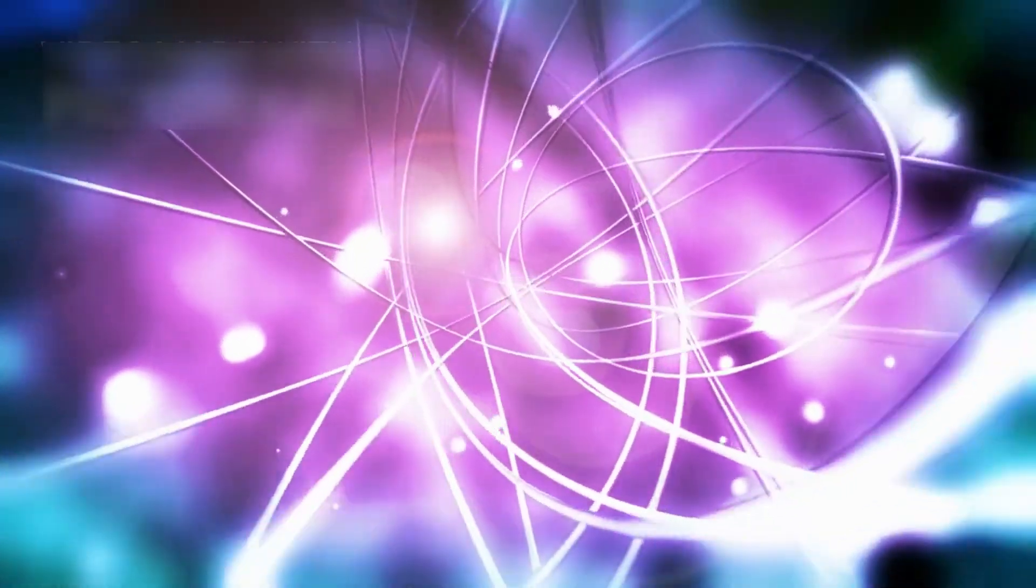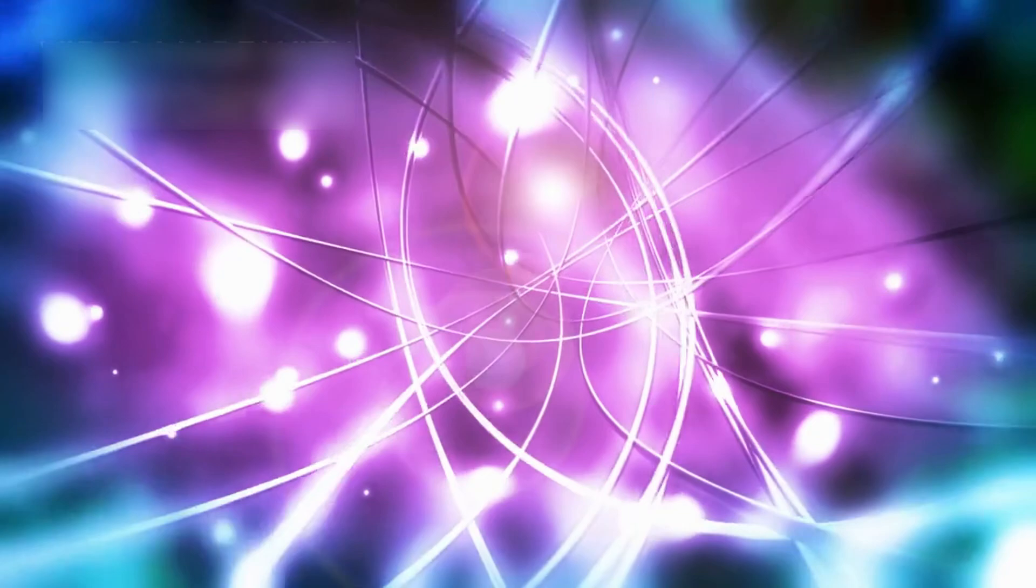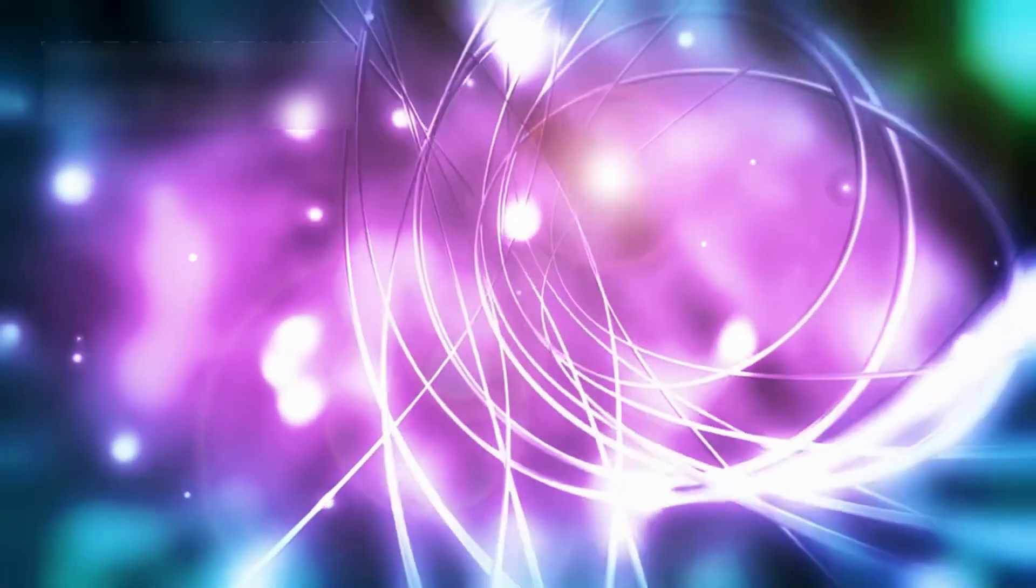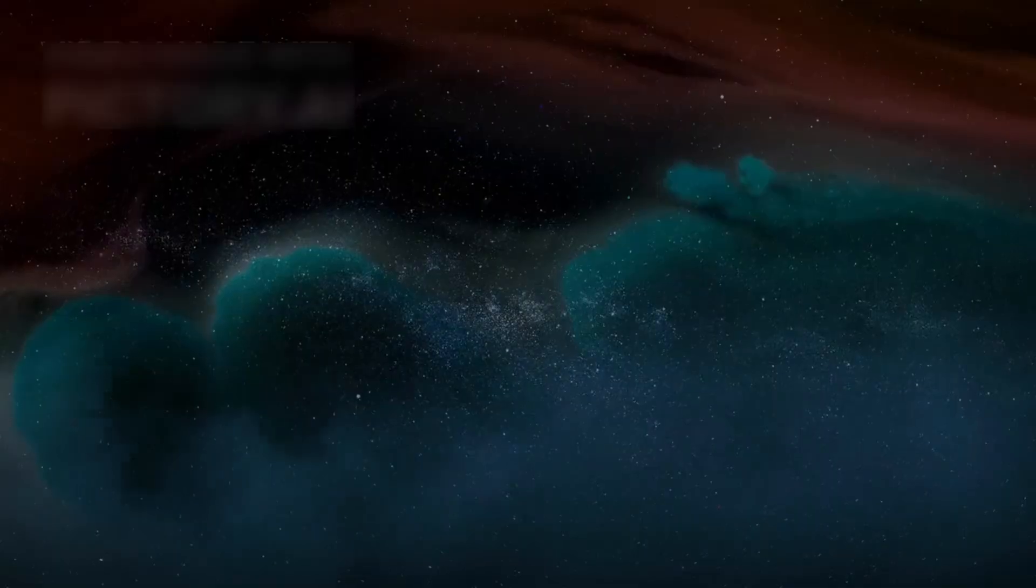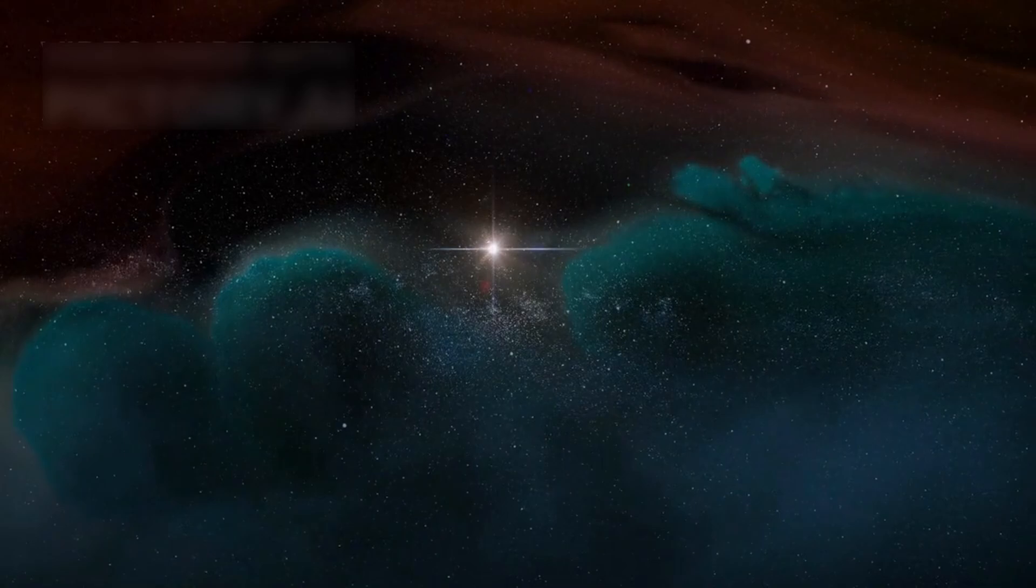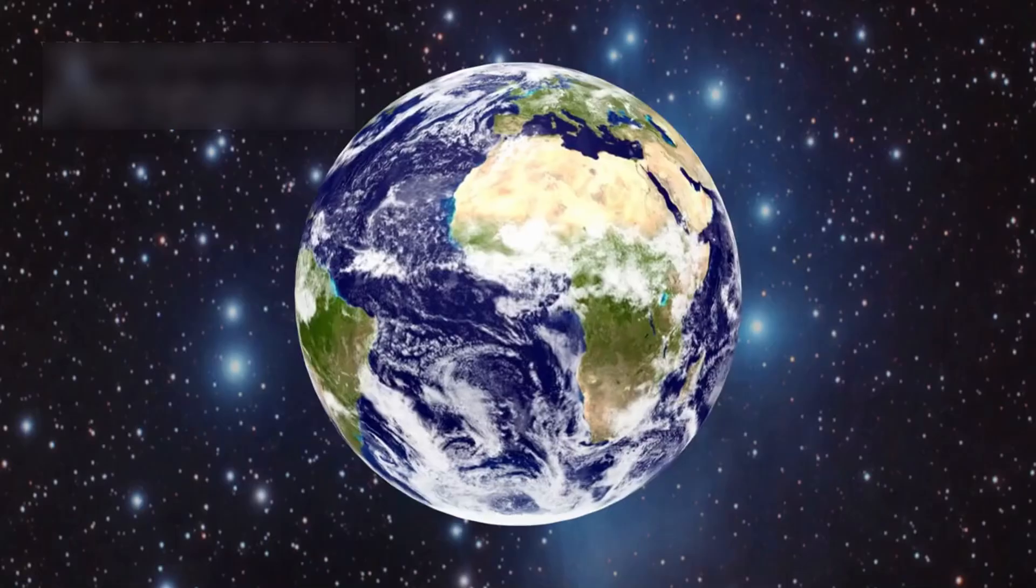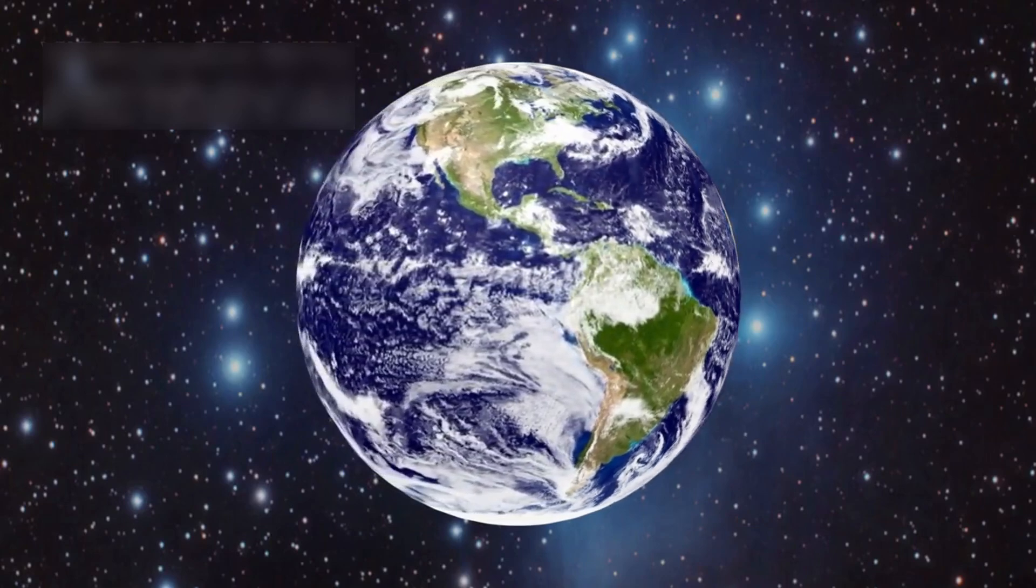Supernovas scatter essential elements—carbon, iron, oxygen—into space, forming the building blocks of future stars, planets, and possibly life. In this way, Betelgeuse's end is not just about destruction, it's about rebirth. Its materials may someday become part of new worlds or even living beings. As Carl Sagan famously said, we are made of star stuff. Betelgeuse reminds us of that truth.